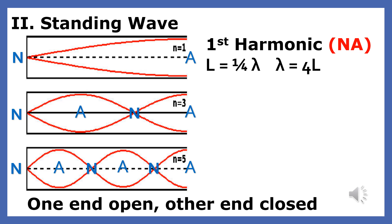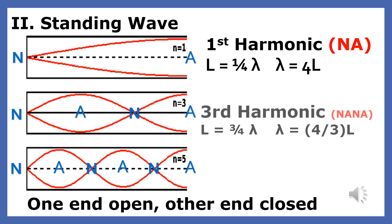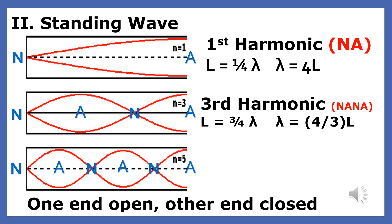Now let's find how many quarter wavelengths we have in the next harmonic. We have N, A, N, A — so we have three quarter wavelengths. Right away we see that this kind of standing wave is different than the one that is closed at both ends. Since we have three times more wavelengths than the fundamental, this standing wave is produced by a frequency that is three times — not two times — the fundamental.